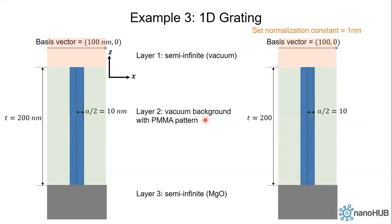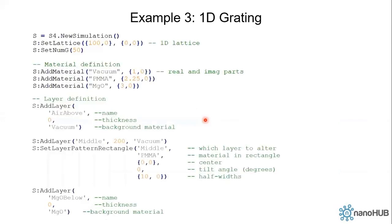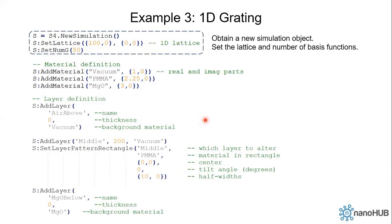Let's write our own control file. First of all, we need to obtain a new simulation object. We set the lattice constant. Here we have periodicity in the x direction only, so we only need to set one basis vector and leave the other as zero. Then we set the number of Fourier functions.